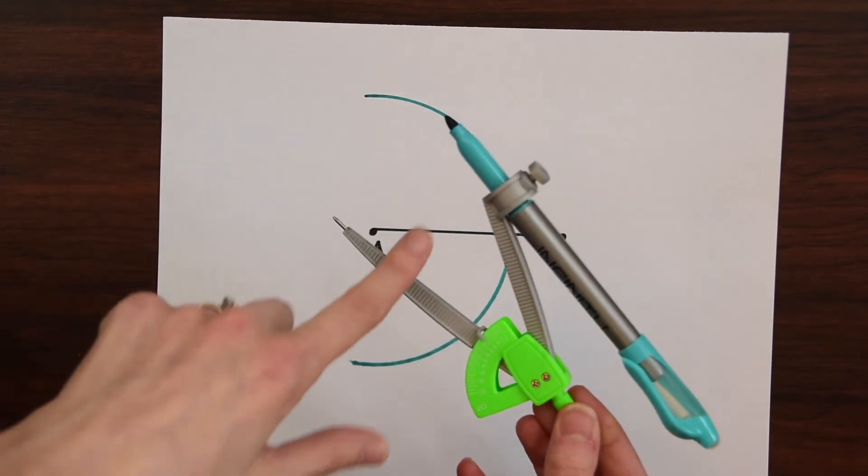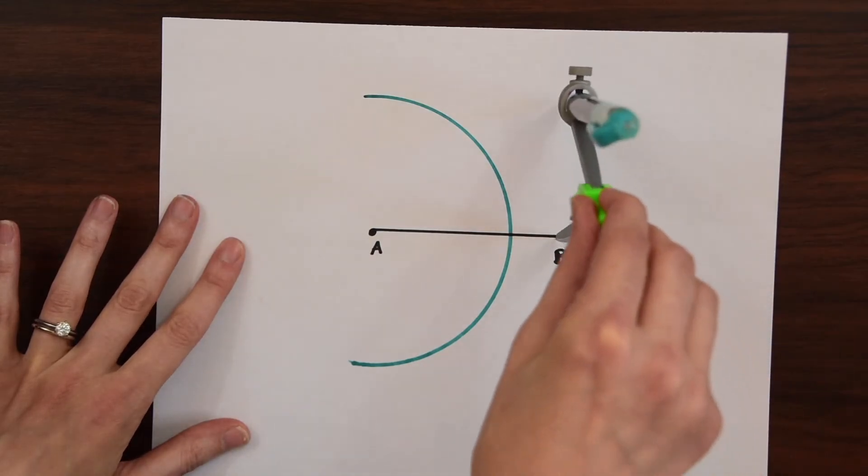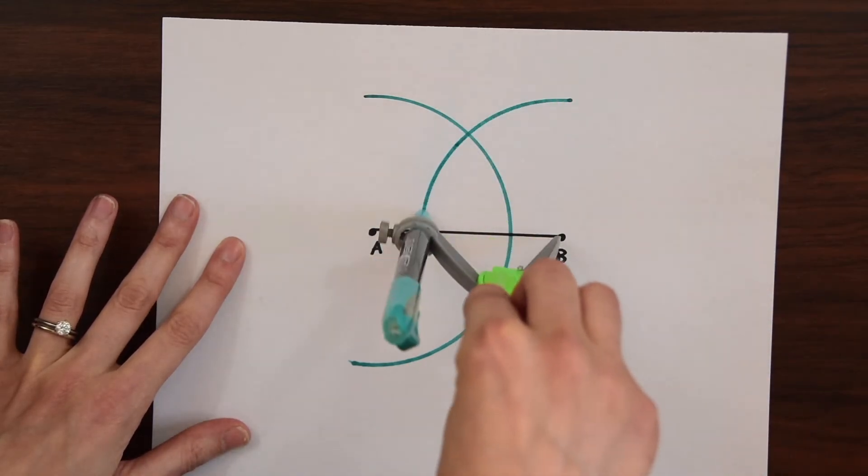And we're going to keep the same measurement, the same distance with our compass, and then just place it on point B and do the same thing. Make another semicircle.